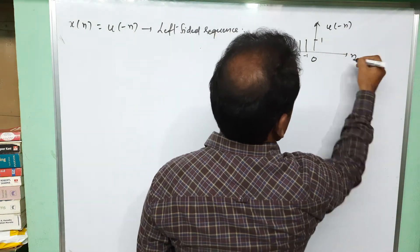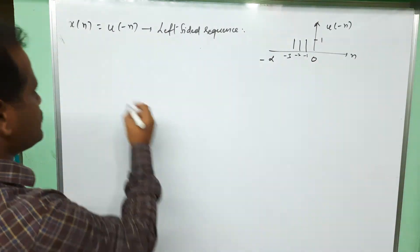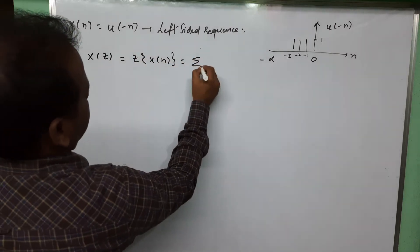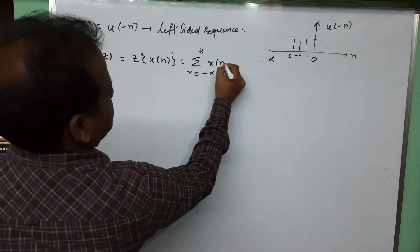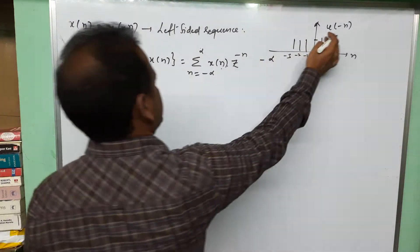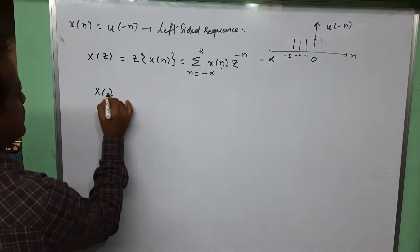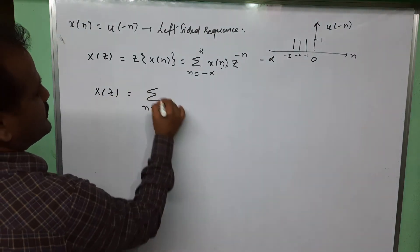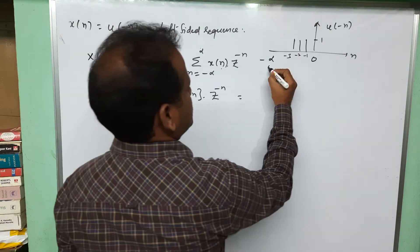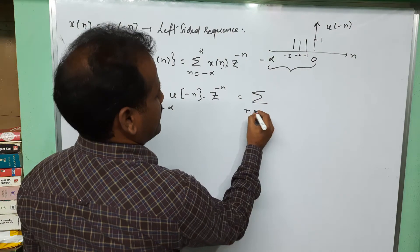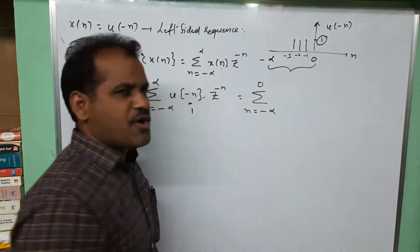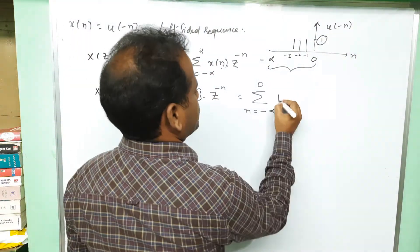Let us find the Z transform of this function. The Z transform of any signal x of n is represented as X of z, equal to the summation from n equals minus infinity to plus infinity of x of n multiplied by z raised to minus n. Applying this formula, since x of n is u of minus n, we get X of z equal to the summation of u of minus n times z to the power minus n. Since u of minus n exists only from minus infinity to zero, we write the summation from n equals minus infinity to zero, where u of minus n equals 1, multiplied by z raised to minus n.